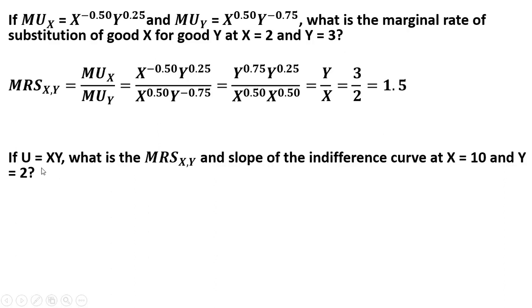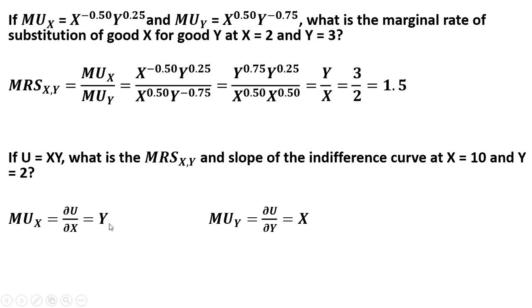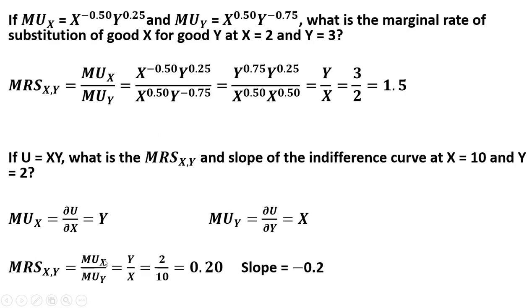Another example: if the utility function equals x times y, what is the marginal rate of substitution of x for y, and the slope of the indifference curve at x equals 10 and y equals 2? Taking the partial derivative of the utility function with respect to x gives marginal utility of x equals y, and with respect to y gives marginal utility of y equals x. So the MRS equals y over x. With y equals 2 and x equals 10, the MRS is 0.2 — the consumer is willing to give up 0.2 units of good y for one more unit of good x. Since MRS equals the absolute value of the slope, the slope at that point is minus 0.2.